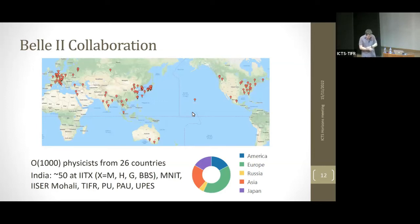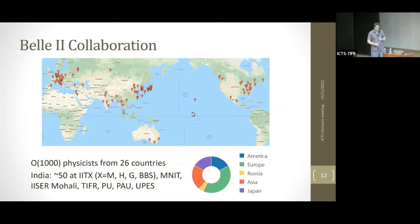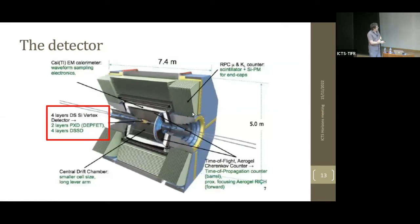The Belle II collaboration has around 1000 experimentalists from across the globe, relatively evenly spread between the Americas, Asia, and Europe. There is a significant Indian contribution — around 50 of us — from four IITs, NIT Jaipur, IISER Mohali, TIFR, Punjab University, Punjab Agricultural University, and UPES in Dehradun which recently joined. India's engagement goes back around 20 years to the earlier Belle program.